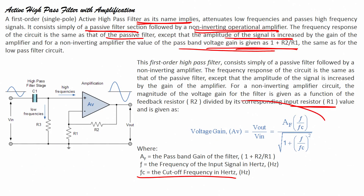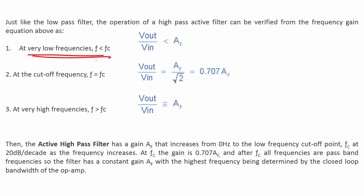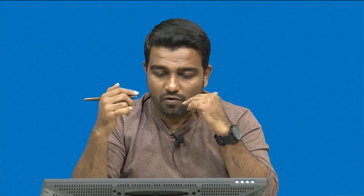At very low frequencies, Vout/Vin will be extremely less than AF. At f equals FC, the value is 0.707 times AF. At very high frequencies, the value equals AF. So the active filter has a gain AF that increases from 0 Hz to the lower cutoff point, with a 20 dB per decade roll-off. For a second order filter it is 40 dB per decade, third order is 60 dB per decade. At FC the gain equals 0.707 AF, and after FC all frequencies are in the pass band with a constant gain of AF.